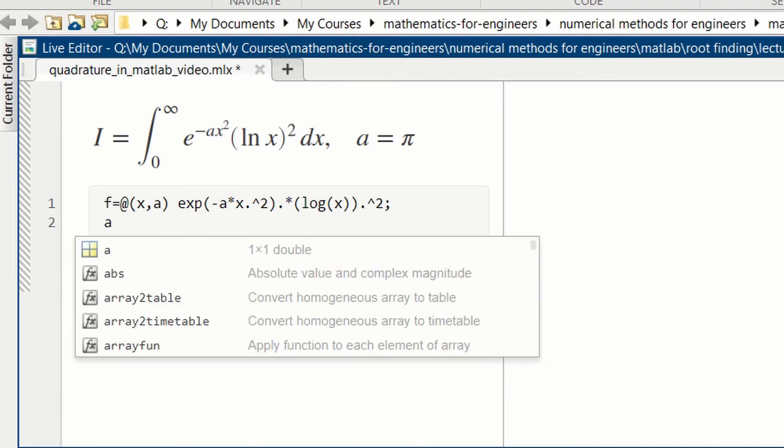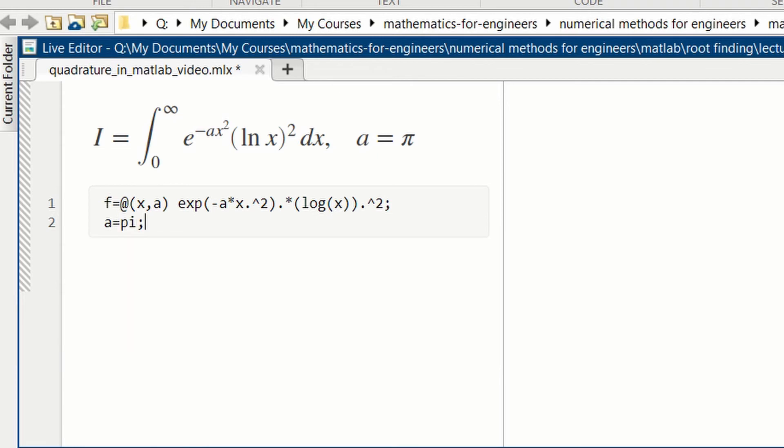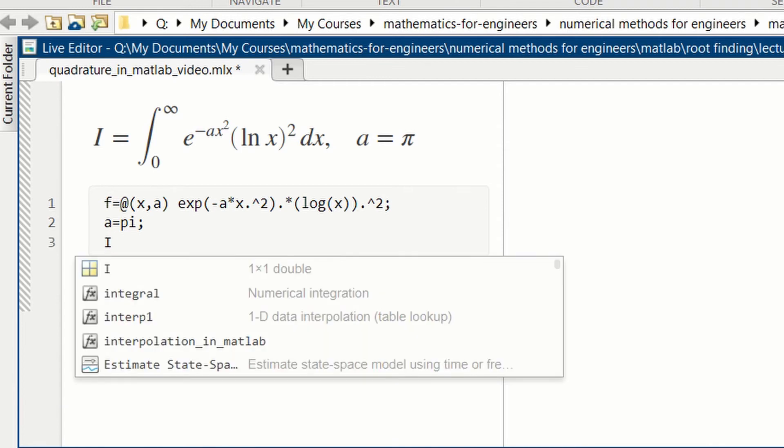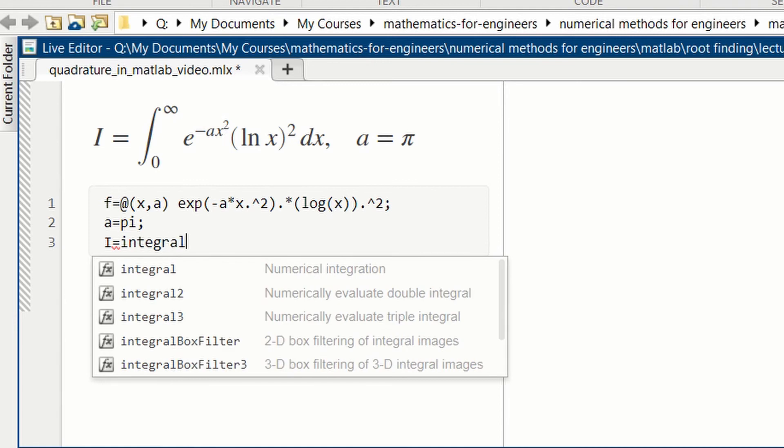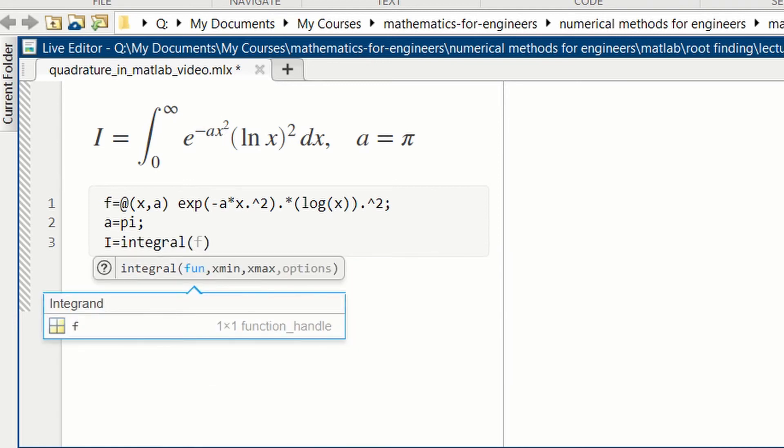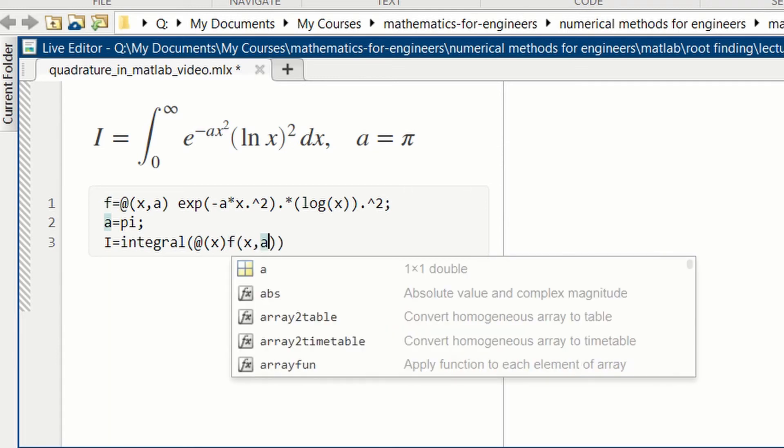The parameter should be equal to pi. So we set the parameter value. And then we do the integral. We set i equal to the integral function @(x), saying that we're integrating with respect to x, of this function, which is f(x,a).